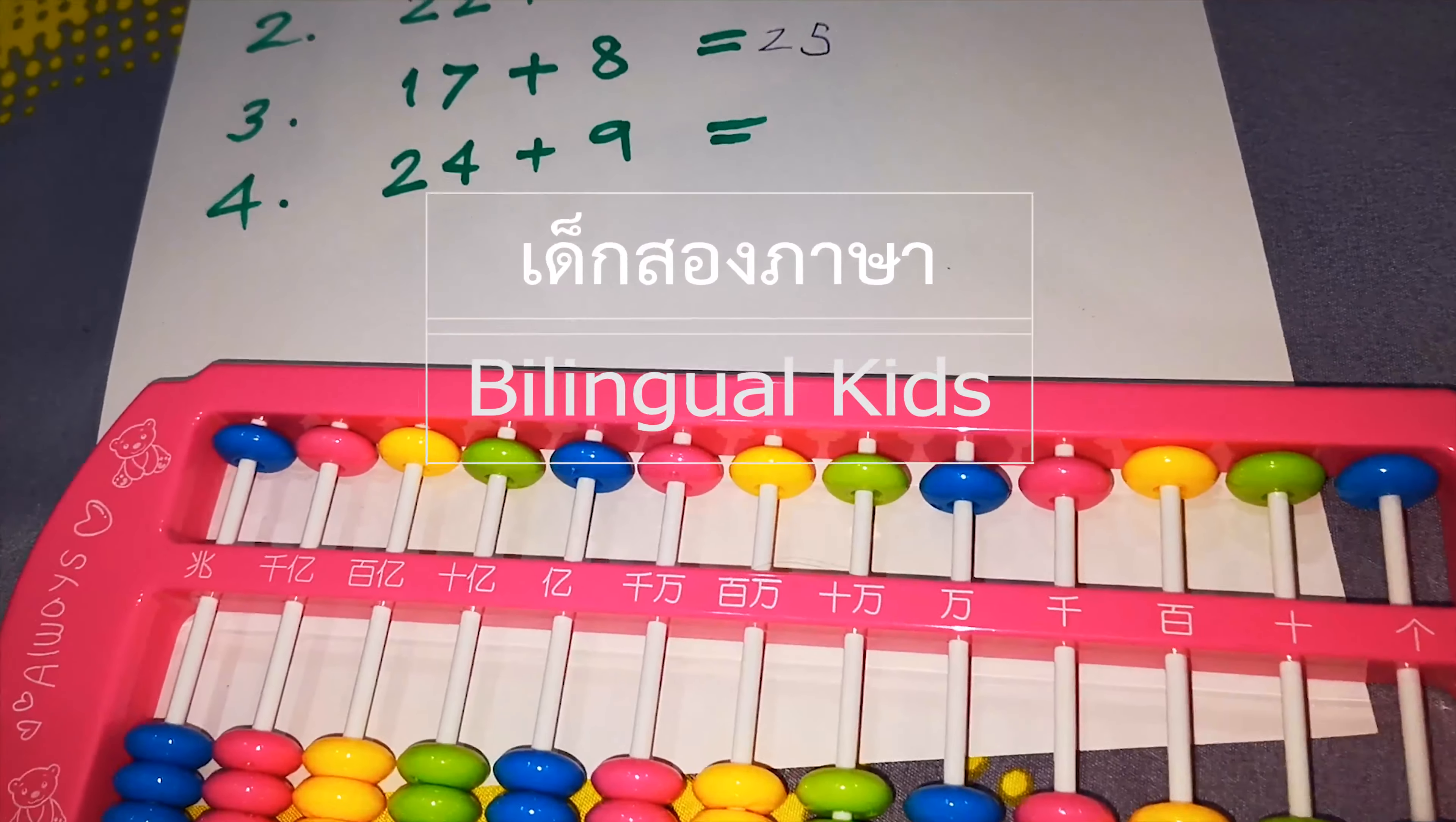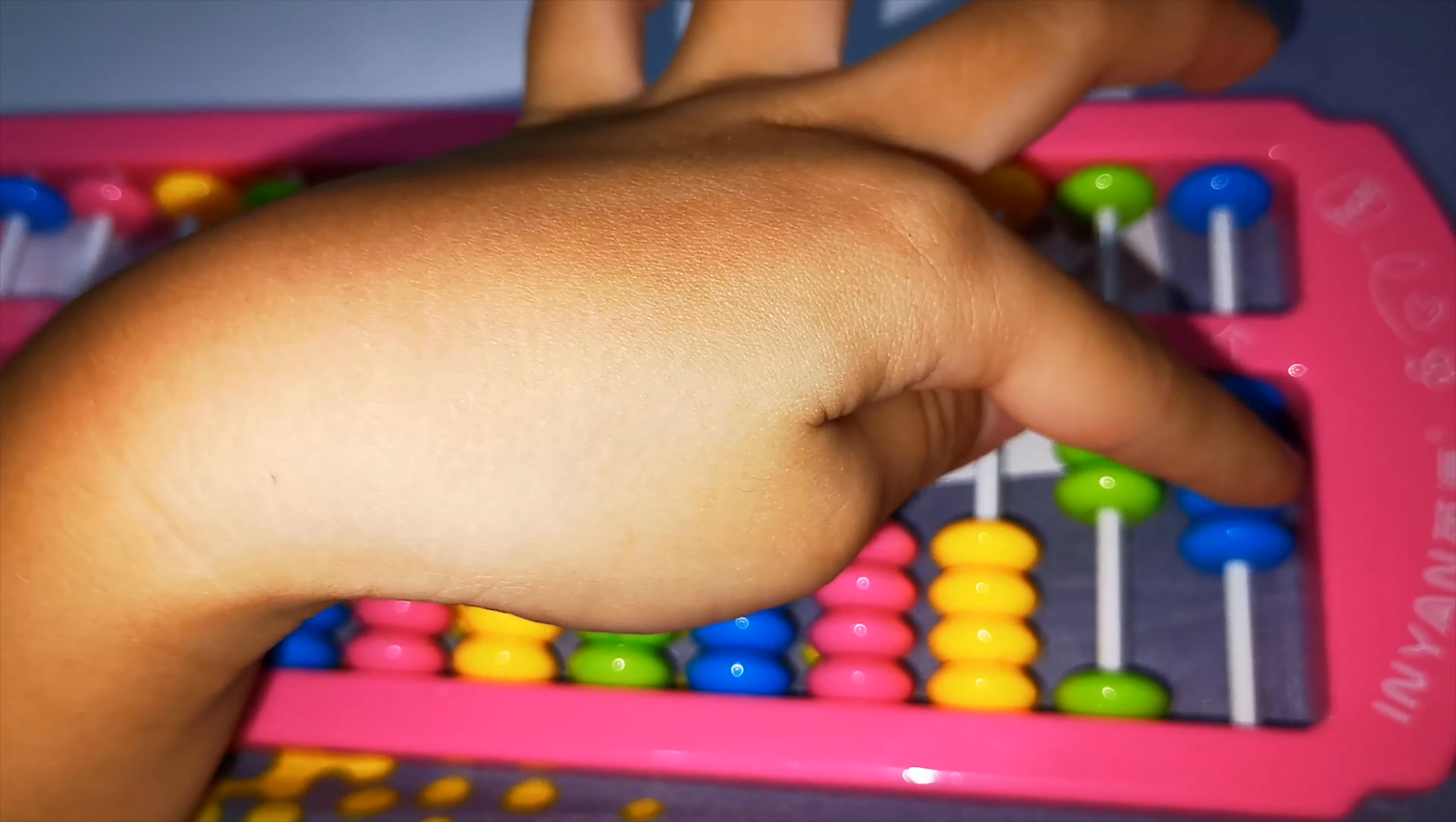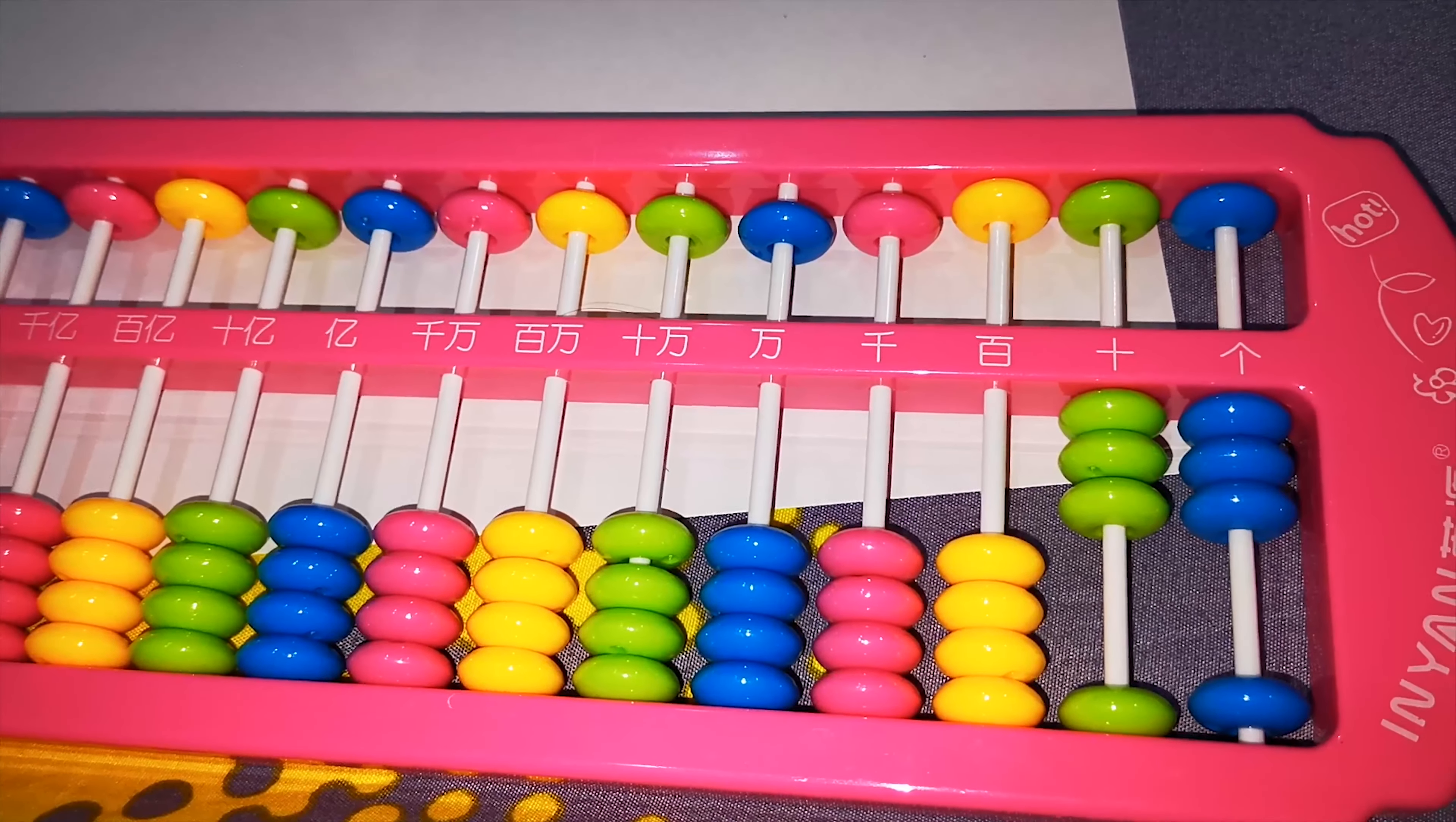Question number 4: 24 plus 9. Okay, add 20 and add 4 equals 24. How about 9? Add 10 and subtract 1. Equal 33. Yes, good. Get the answer.